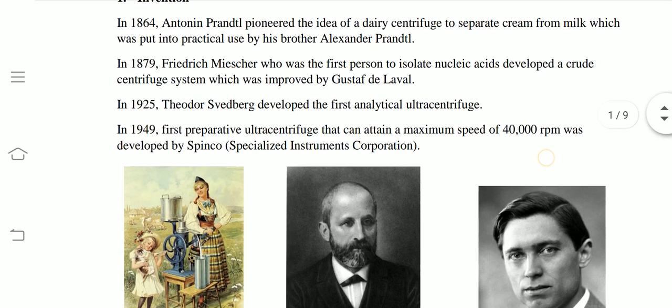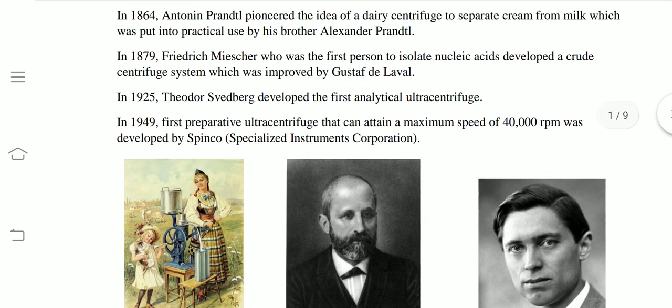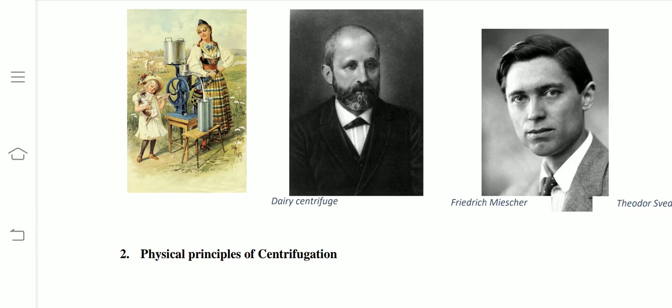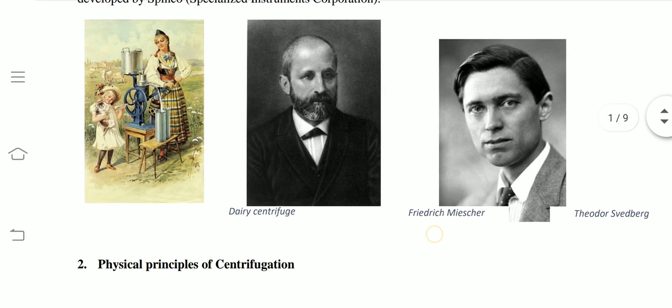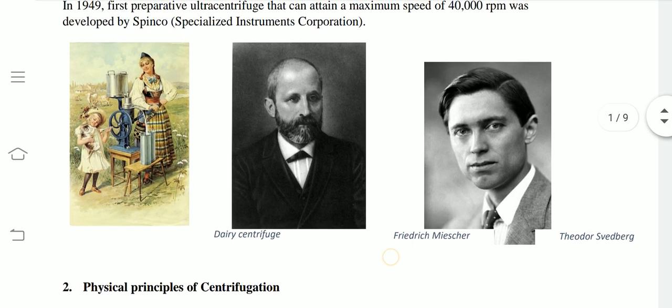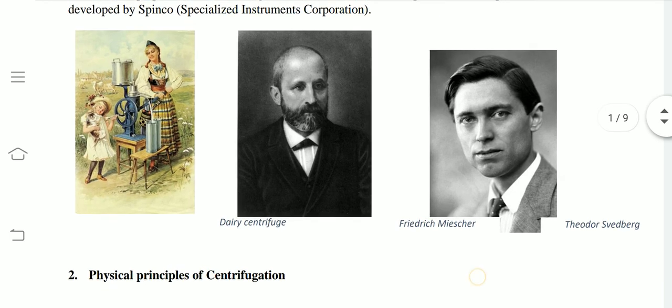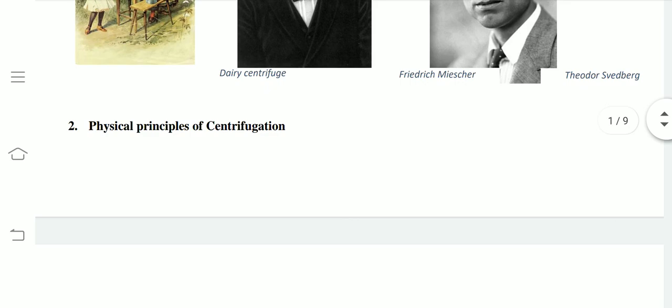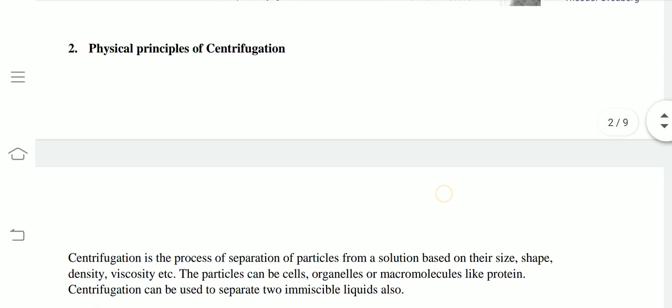And in 1949, the Specialized Instrument Corporation developed a maximum speed of 40,000 RPM by Spinko. So, we can see the scientists behind this technique.